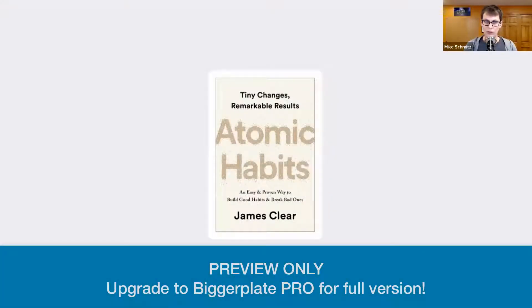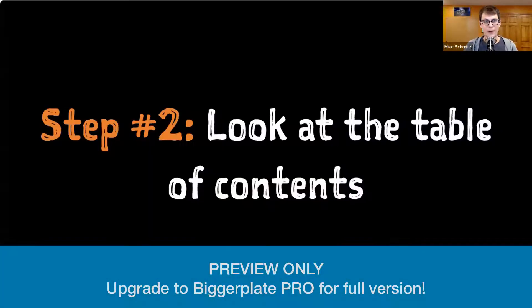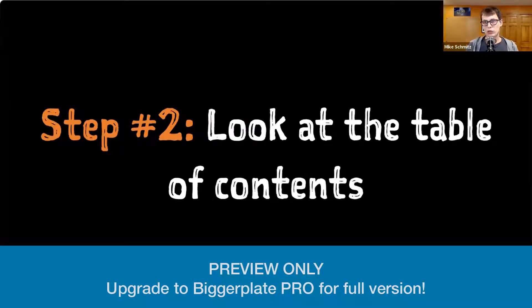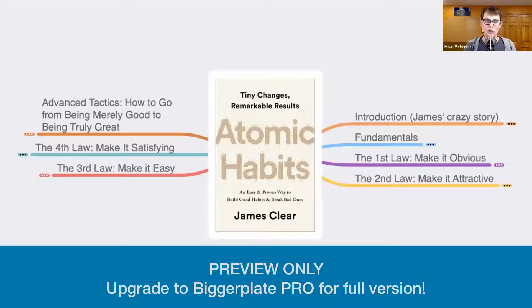This is always a starting point — the picture of the book title in the middle. Next, you look at the table of contents. The table of contents gives you an idea for the flow or the structure, the journey the author is going to take us on. So for the book Atomic Habits, it's going to look something like this.